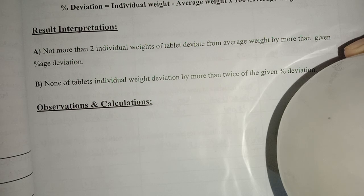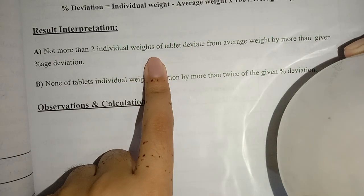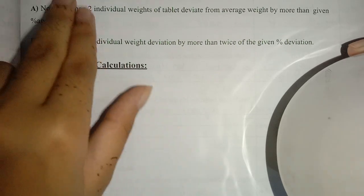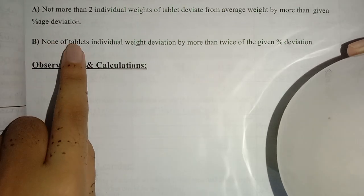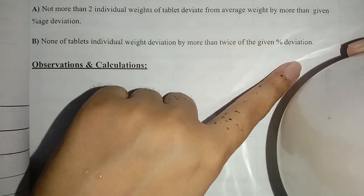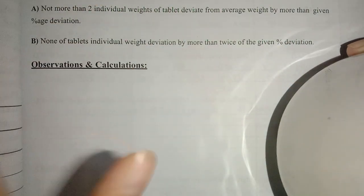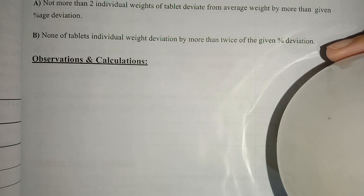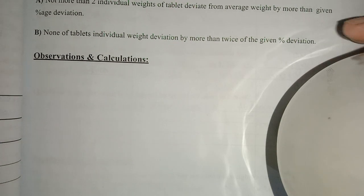Now how will you find results? If you have two tablets with individual weight deviating from average weight by more than the given percentage deviation, you will fail. Also, none of the tablet's individual weight should deviate by more than twice the given percentage deviation. So any tablet you have cannot double it. No tablet should deviate by more than twice the given percentage deviation.